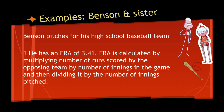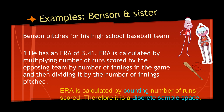Now let's take a look at some examples in the content. We've got Benson and Benson's sister. Benson plays on a high school baseball team and his sister is doing a math project. Benson has an ERA — earned run average — of 3.41. We calculate the ERA by multiplying the number of runs scored by the opposing team by the number of innings in the game, then dividing by the number of innings pitched. In this case, even though it is calculated, we've counted the number of runs scored, so it ends up being a discrete sample space.